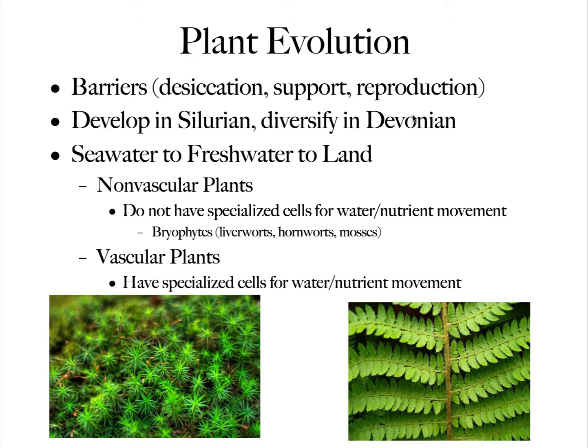There are two groups of plants. There are non-vascular plants, and these plants do not have specialized cells for water and nutrient movement — they don't have the plumbing from a root through special cells that leads up to the leaves and the rest of the plant. Examples of these are the Bryophytes, which include the Mosses, the Hornworts, and the Liverworts.